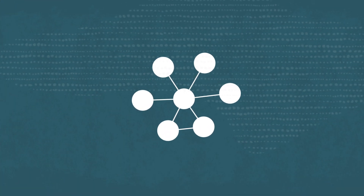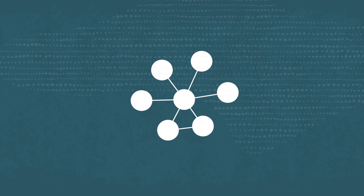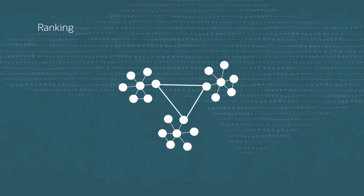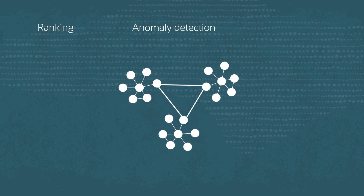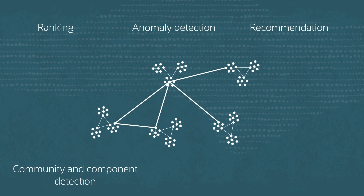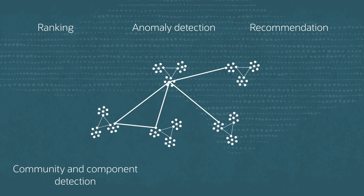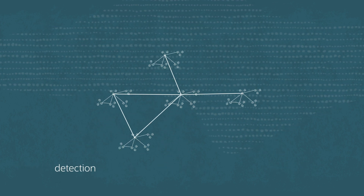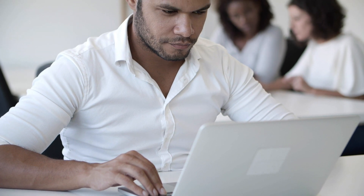One of the most powerful things about graphs is that they allow you to perform analyses like ranking, anomaly detection, recommendation, community and component detection, reachability, and clustering. Writing the algorithms to perform these analyses can require highly specialized data science and statistical skill.